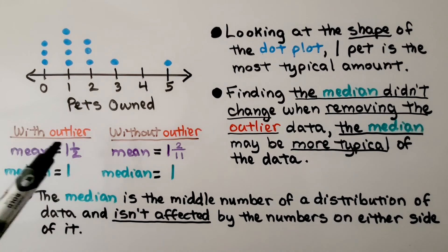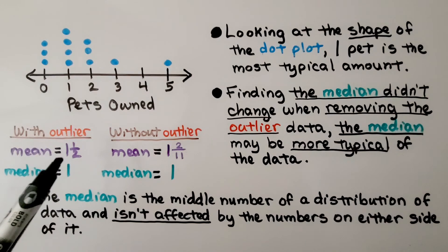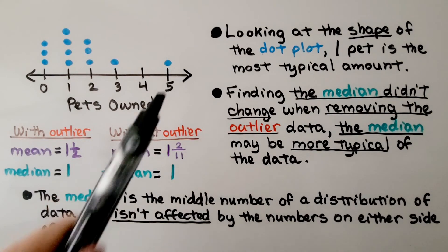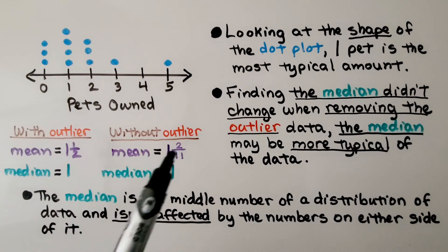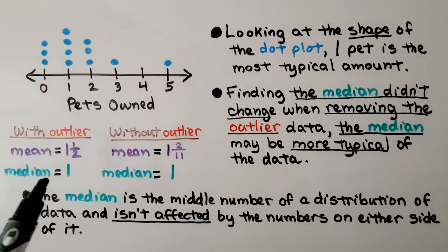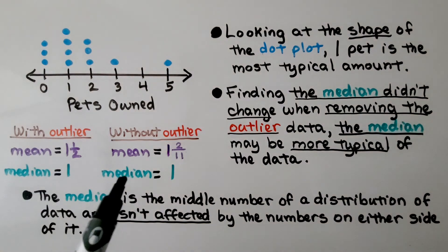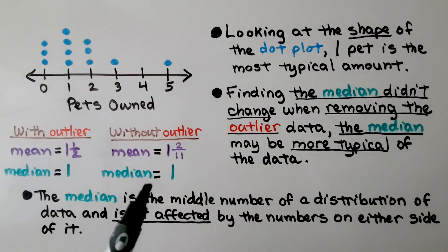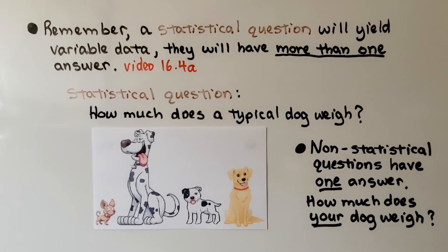Looking at the shape of the dot plot, one pet is the most typical amount. Finding the median didn't change when removing the outlier, this 5, so the median may be more typical of the data shown here. With the outlier, our mean was 1.5. Without the outlier, our mean was 1 and 2 elevenths. With the outlier, our median was 1, and without the outlier, our median was 1. That's why the median may be more typical of the data. The median is the middle number of a distribution of data and isn't affected by the numbers on either side of it.